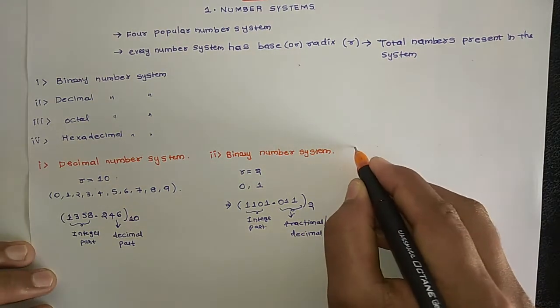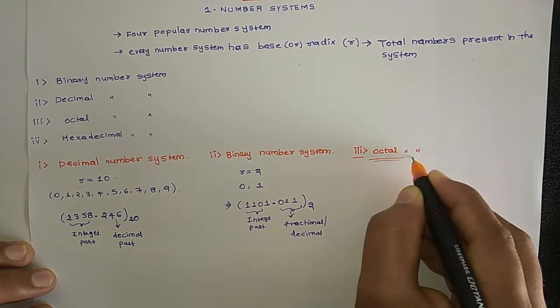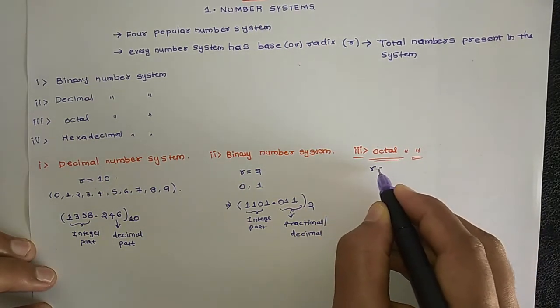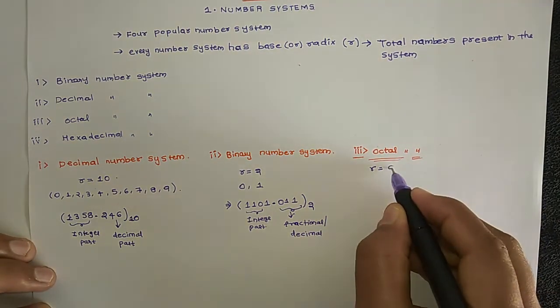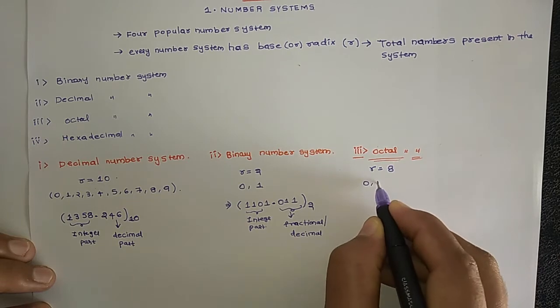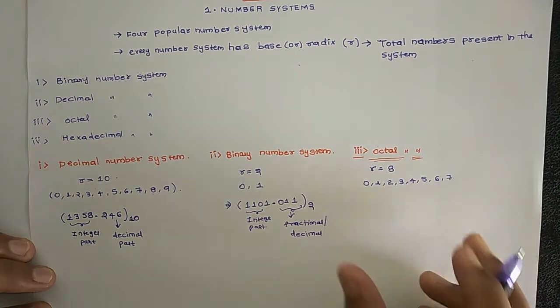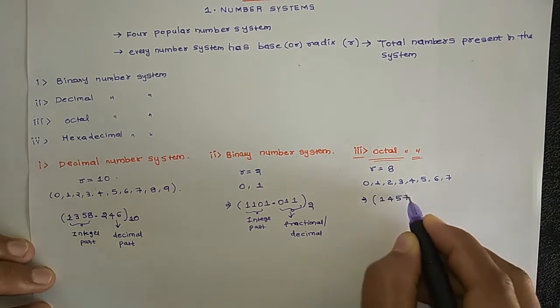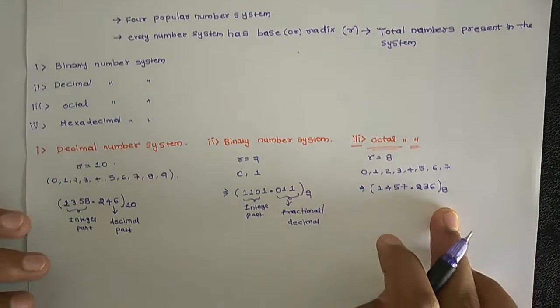Third number system is Octal number system. Octal generally has radix 8. The numbers range from 0 to 7. The numbers present are 0, 1, 2, 3, 4, 5, 6, 7. To represent a number in octal, for example: 145703.6. The base or radix here is 8 to represent.